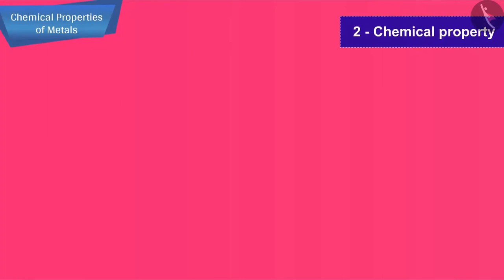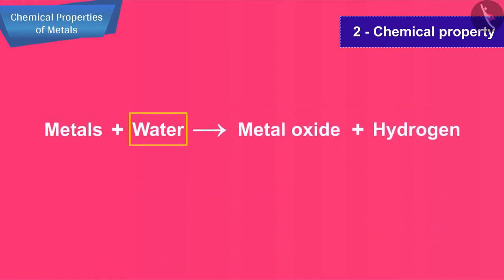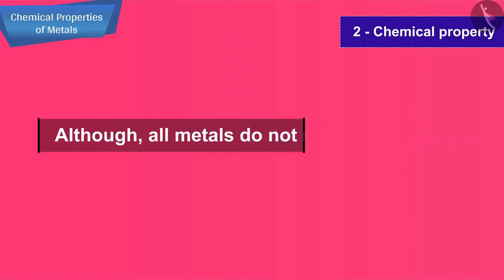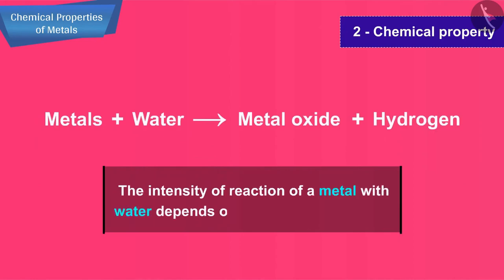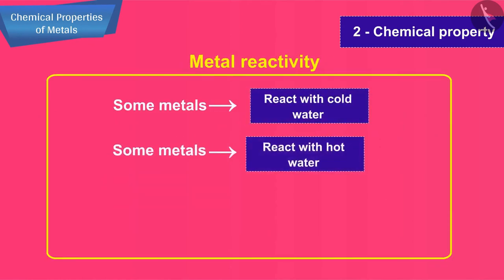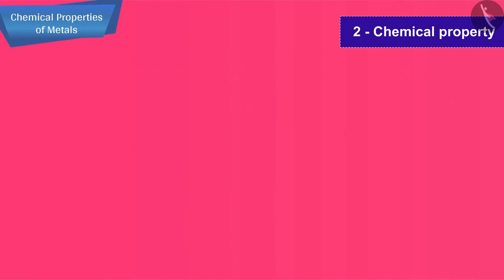The second chemical property that we are about to study is the reaction of metals with water. Metals react with water to form metal oxide and hydrogen gas. Although all metals do not react with water. The intensity of reaction of a metal with water depends on its chemical reactivity. Some metals react with cold water, some react with hot water, some react only with steam, whereas some do not even react with steam.